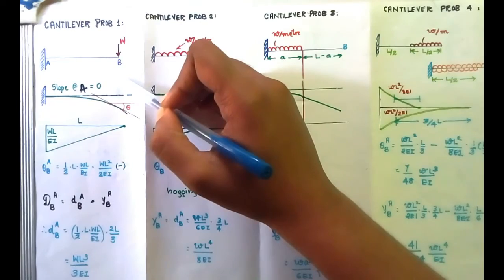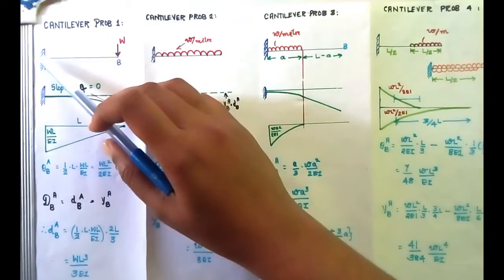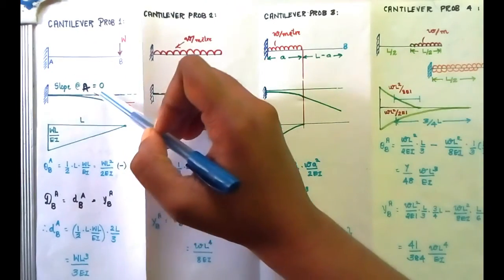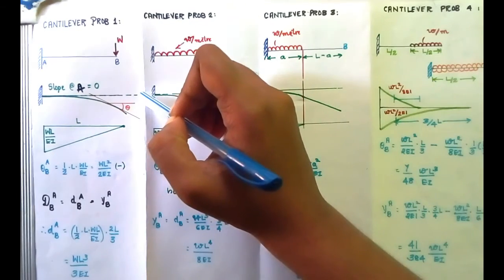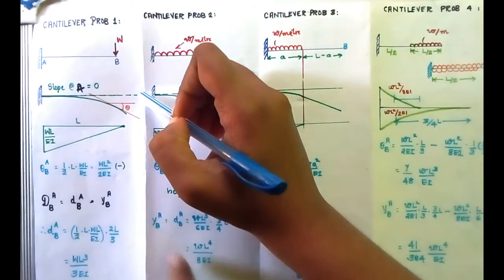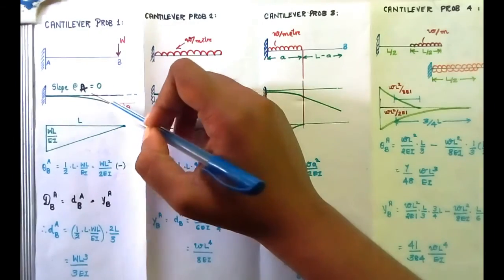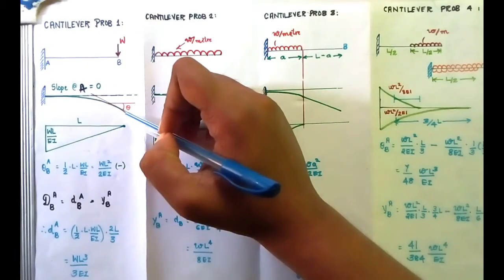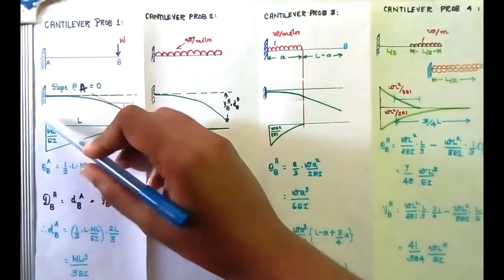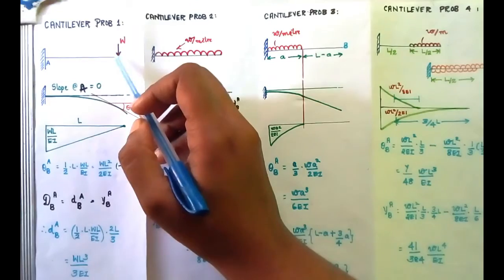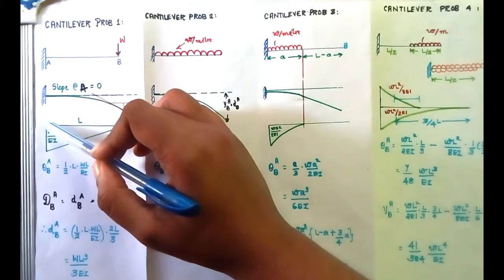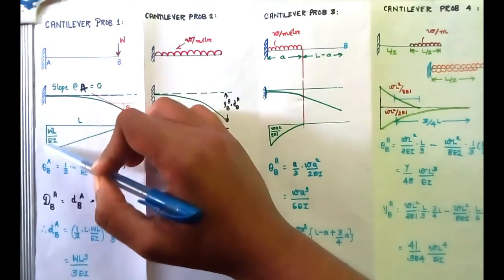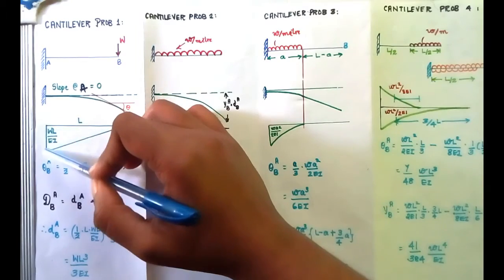We know that the slope at A is zero, so the reference tangent will be the same as the original beam structure, as we have already seen. We need to find the slope at B and deflection at B. The M by EI diagram is drawn — with W into L giving a triangular bending moment diagram. The M by EI diagram has a value of WL by EI at the fixed end.